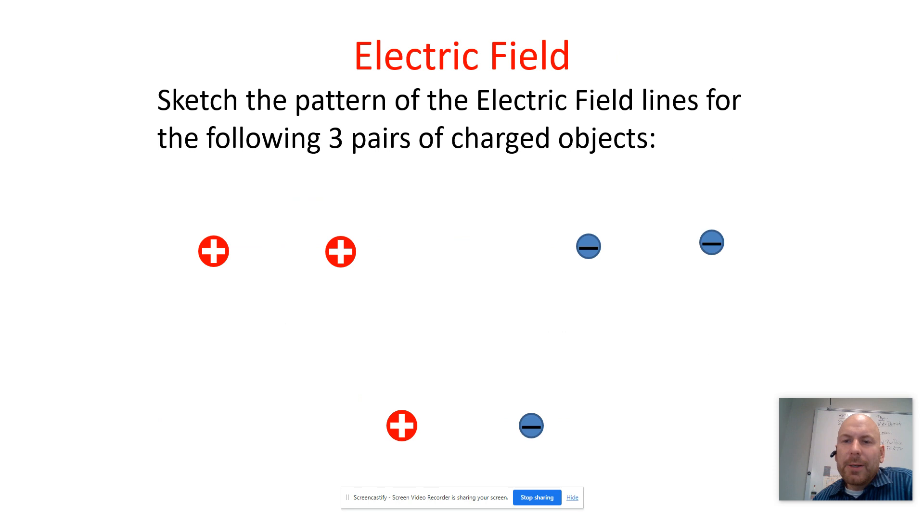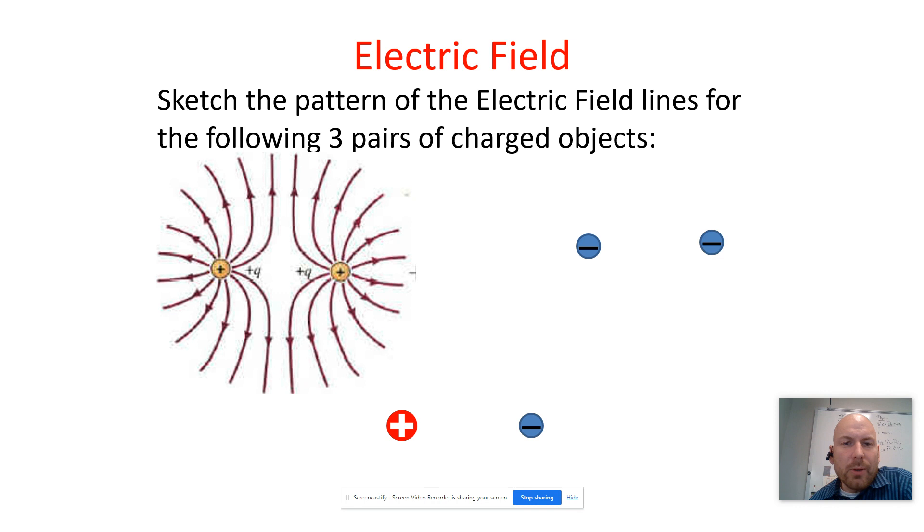Now you can get a combination of different things. So the simplest combinations are these. So you have two positives. What does that look like? Again, they're creating outward directed fields. Both of them are creating electric fields going outward. And so the combination of those two looks like that.